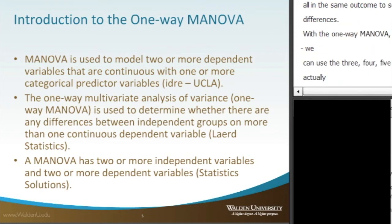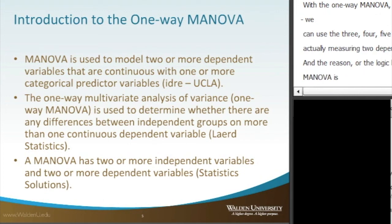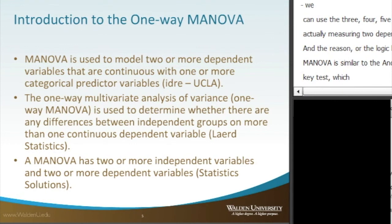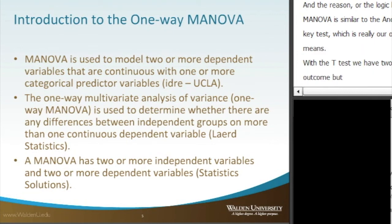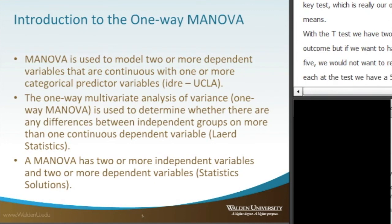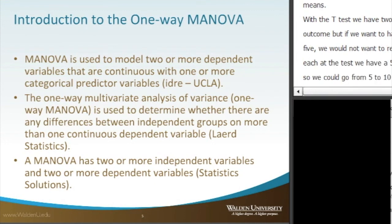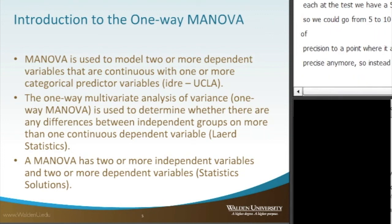The logic behind doing a MANOVA is similar to the ANOVA coming from the t-test, which is really our original test of means. With the t-test, we've got two groups and one outcome. But if you want to have three, four, or five groups with one outcome, we would not want to repeat the t-test over and over again, because for each t-test we've got a five percent level of precision — so we could go from five to ten to fifteen to twenty percent, to a point where it's no longer precise. So instead of doing multiple t-tests, we just do an ANOVA, which is a single test that maintains our five percent level of precision.